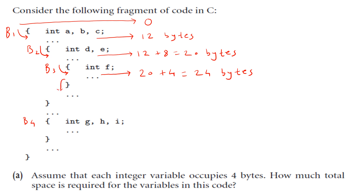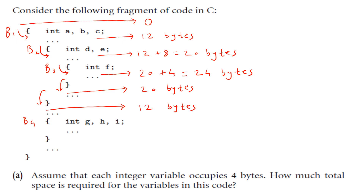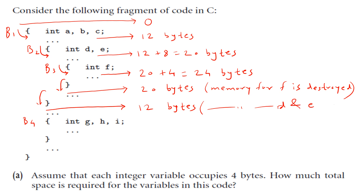Now when you exit from block three, memory for f will be destroyed and we go back to 20 bytes — because f was declared in block three and we are coming out of block three, so now we are in block two. Then when you come out of block two also, memory allocated for variables d and e will also be destroyed, so we go back to 12 bytes.